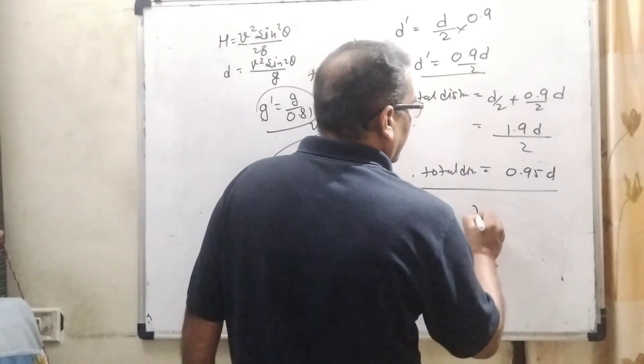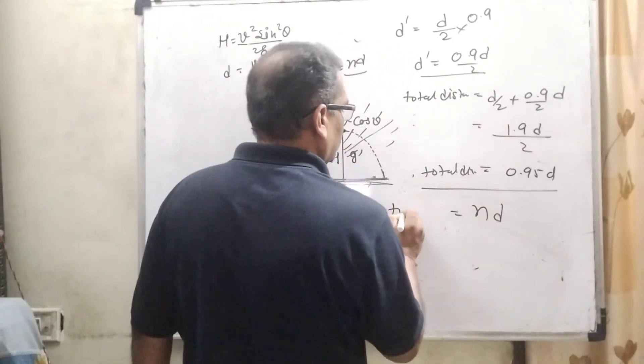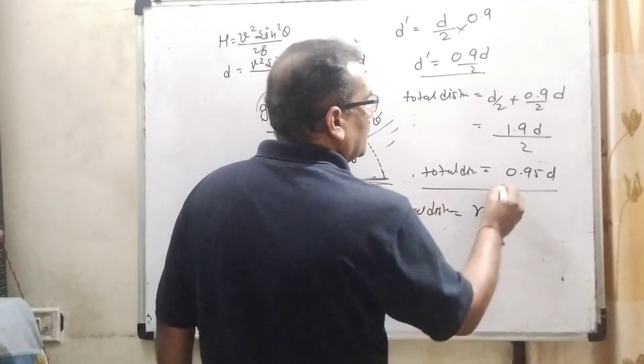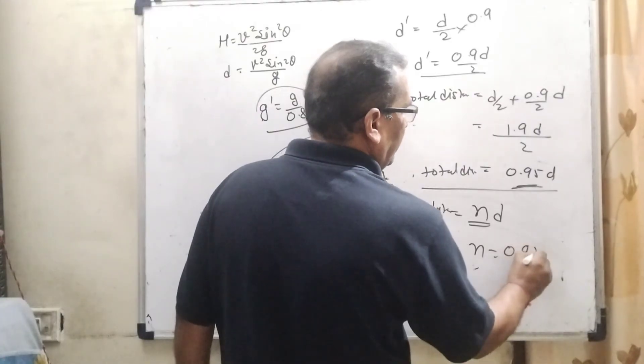In the given question, total distance is ND. So by comparing, N we get 0.95.